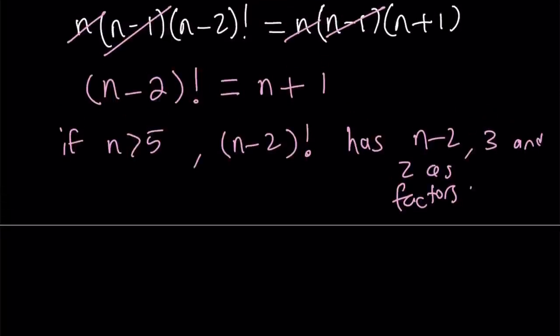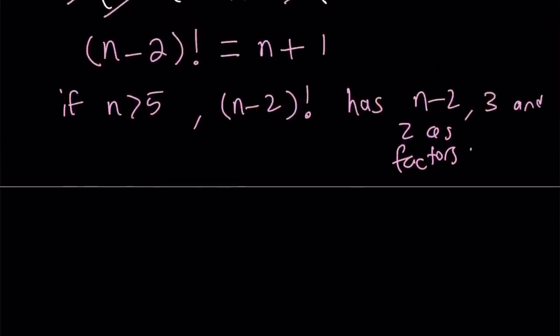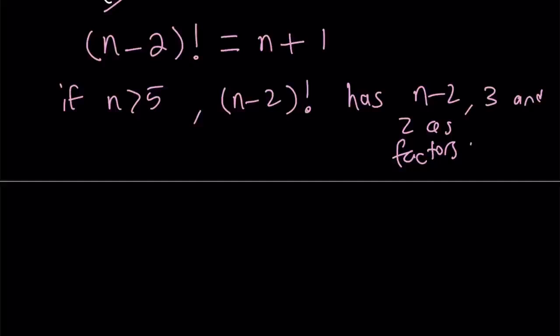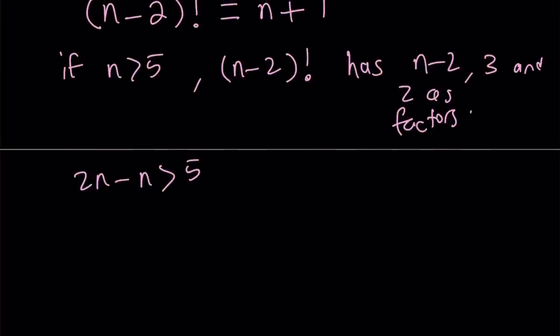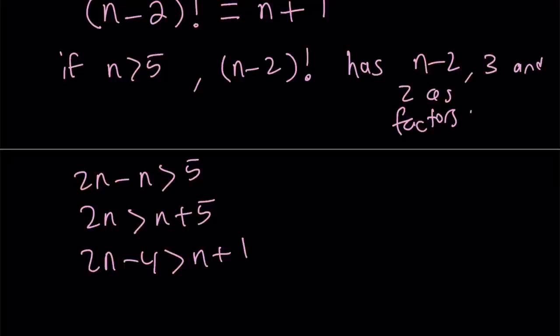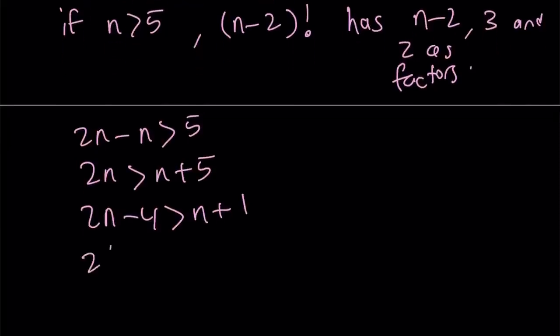And for certain values, when n gets larger, I want to find an upper bound for this one. Since n is greater than 5, I can write it as 2n minus n is greater than 5. Then 2n is greater than n plus 5, and 2n minus 4 is greater than n plus 1. By putting the n on the other side and then subtracting 4 from both sides, I was able to get n plus 1 on the right-hand side. And now I can factor out the 2 and write this as 2 times n minus 2 is greater than n plus 1.